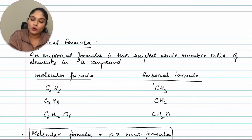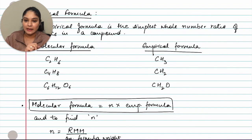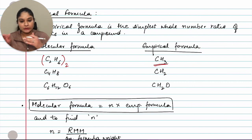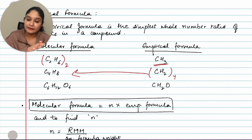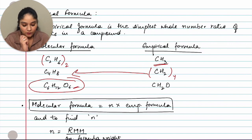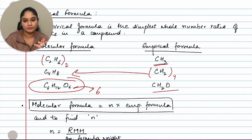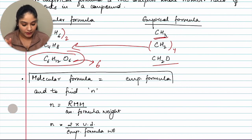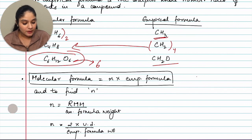Examples: C₂H₆ — taking 2 as common gives CH₃, which is the empirical formula. For C₆H₁₂O₆, the common factor is 6, giving CH₂O as the empirical formula. The relationship is: molecular formula = n × empirical formula. You can also write it as: empirical formula raised to the power n.